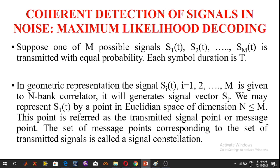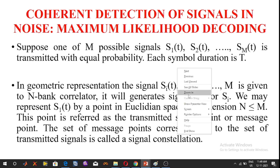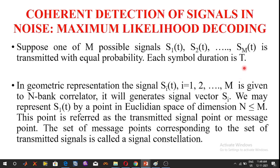Welcome back to precaution tutorials. In this video, I am going to discuss the concept of coherent detection of signals in noise. Suppose capital M possible signals s1(t), s2(t), s3(t), ... sM(t) are transmitted with equal probability and each symbol duration is capital T seconds. In the geometric representation, signal SI(t) is given to an N-bank correlator, which will generate signal vector SI.